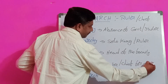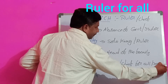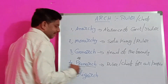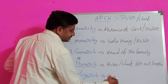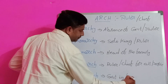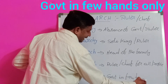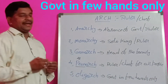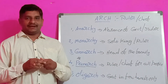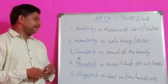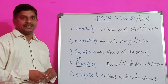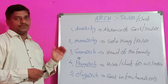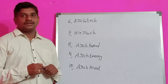Oligarch. In few hands — the cabinet and ministers are there — but only a few people rule the government. Their words are ruling. That is called Oligarchy.